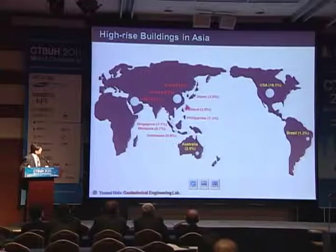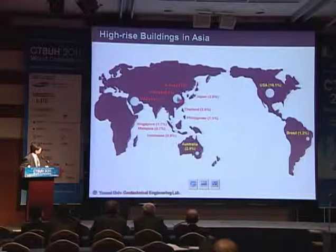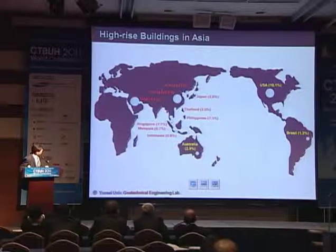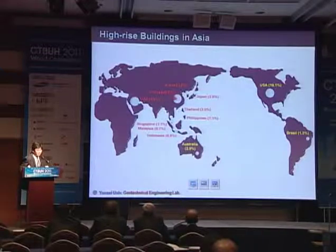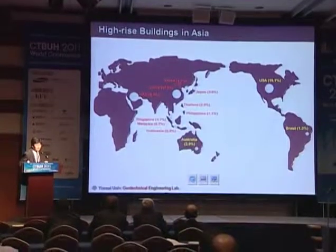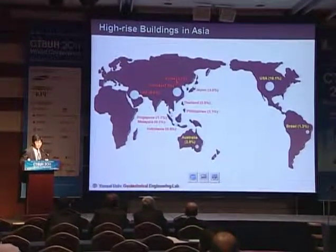This is a familiar map of the world showing the construction market for high-rise buildings. China is number one, occupying about 50% of the construction market for high-rise buildings. The second is the USA, the third is the Arab Emirates, and Korea is number four in the ranking for the super-tall building market in the world.